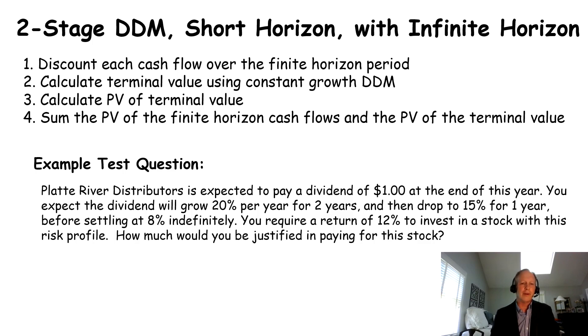Example test question. Platte River Distributors is expected to pay a dividend of $1 at the end of this year. You expect that the dividend will grow 20% per year for the next two years. So 20% then another 20%. So they're going to pay this dividend at the end of the year. We're going to use that as DV1. That's kind of the upcoming year. That's a payment that's going to happen. So that is kind of a next year's dividend situation. It's going to grow 20% then 20% then drop to 15% growth, so still positive growth for one year. And then it's going to settle at this 8% indefinite number. So that's our G at the end. That's our constant growth at the end. You're going to require a 12% return to invest in this stock with this risk profile. That's your discount rate. That's your cost of equity capital. How much would you be justified in paying for this stock?